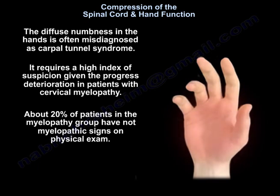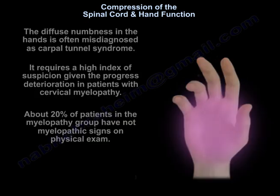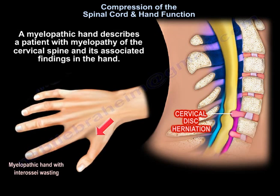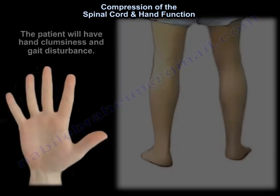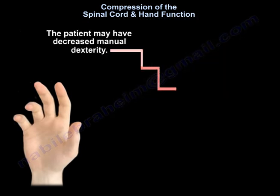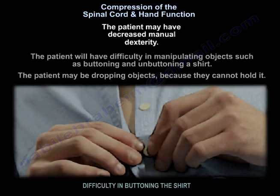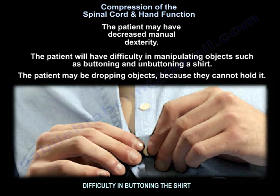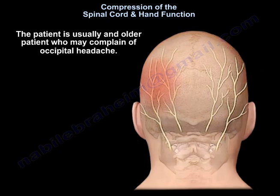About 20% of patients in the myelopathy group have no myelopathic signs on physical exam. A myelopathic hand describes a patient with myelopathy of the cervical spine and its associated findings in the hand. The patient will have hand clumsiness and gait disturbance, difficulty in manipulating objects, buttoning and unbuttoning a shirt, and may be dropping objects. The patient is usually an older individual who may also complain of occipital headache.